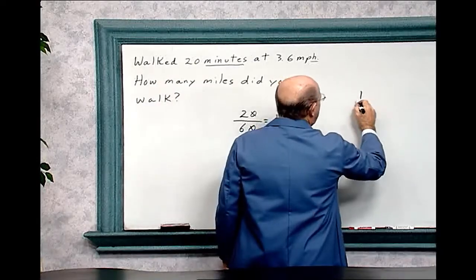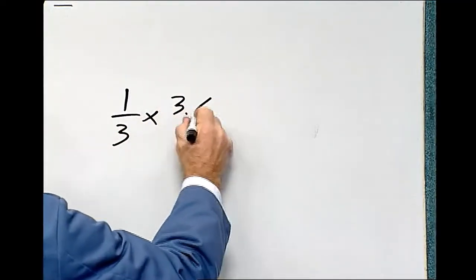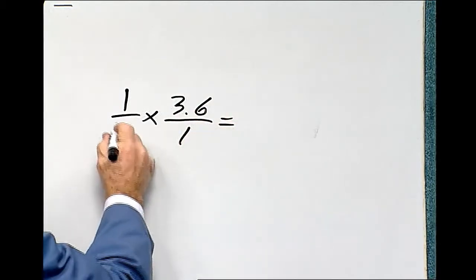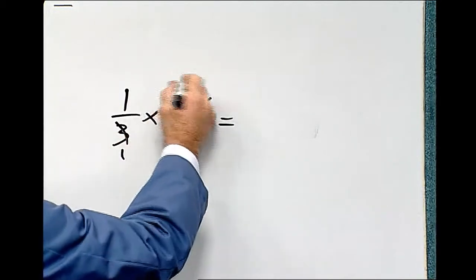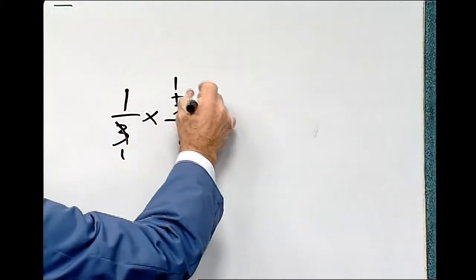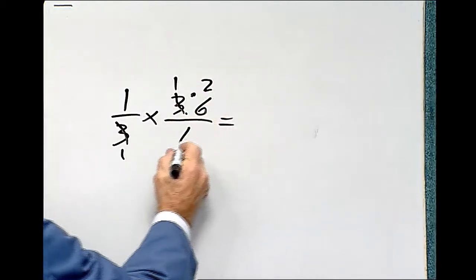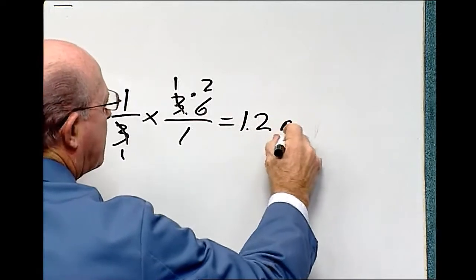Now let's multiply that. One-third multiply that by 3.6 equals—and we can reduce that further. 3 goes into 3 one time, 3 goes into 6 two times. So it's 1.2, and so that would be 1.2 miles.